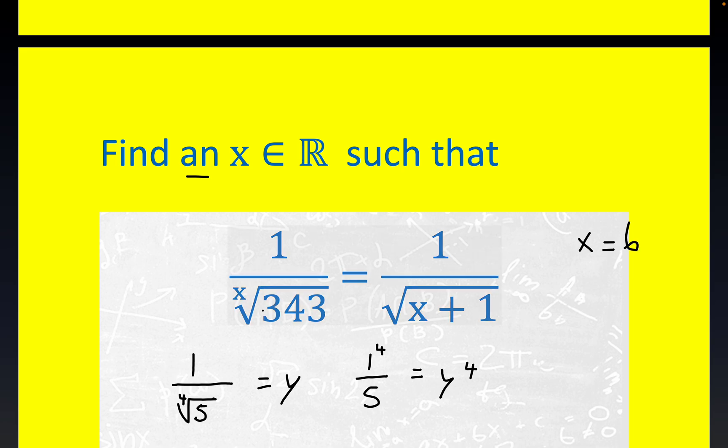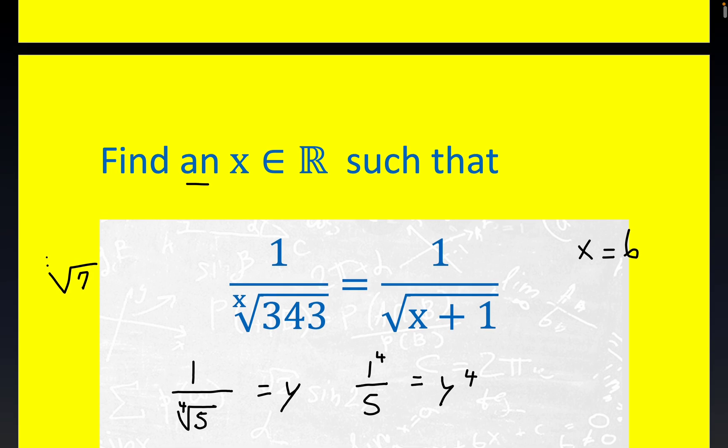If you put a six right here, you can see that, I'll just write this down. The square root of seven raised to the sixth power is equal to 343.